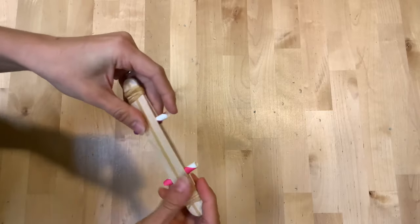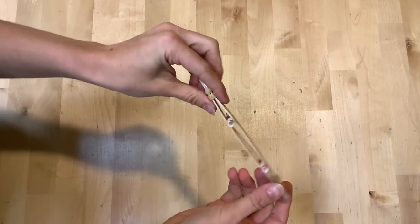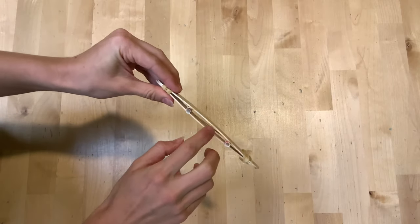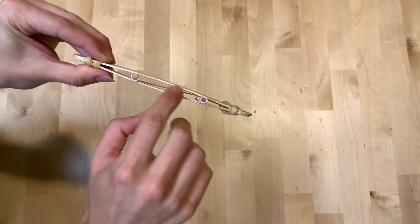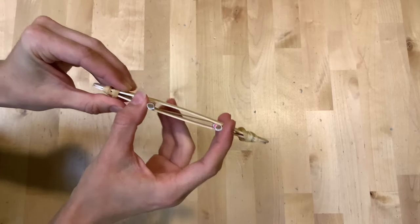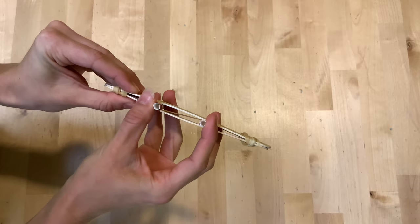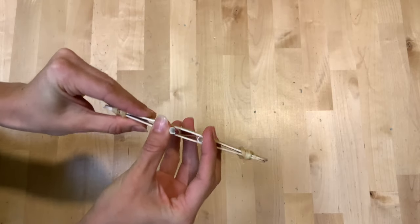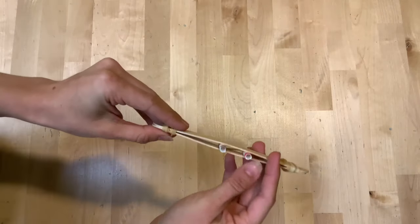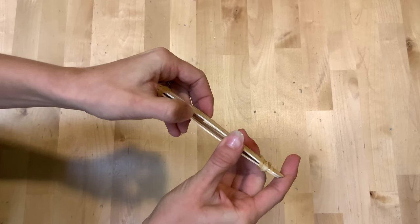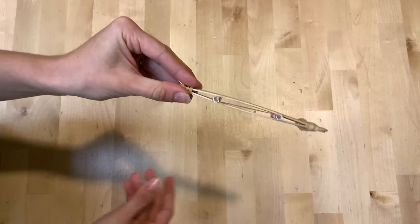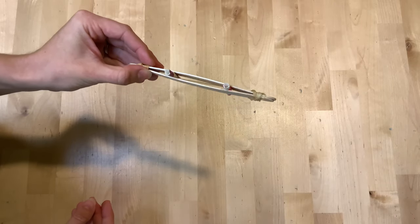And now you have your craft stick harmonica. You'll blow through here so that you vibrate the rubber band that's diagonal in there and remember you can push your straws closer together and it'll make a higher pitch sound or you can pull them further apart and it will make a lower pitch sound. Let's test it out.